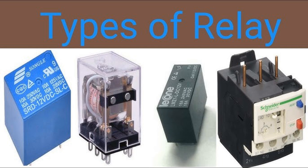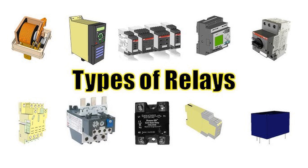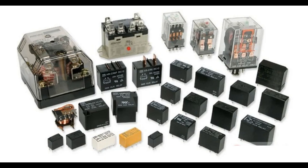Applications: Transformer Protection — used to detect internal transformer faults by comparing the currents on the primary and secondary sides. Generator Protection — monitors for internal faults in generators, such as winding failures, that could otherwise cause severe damage. Bus Bar Protection — protects sections of bus bars by monitoring the currents entering and leaving each section, ensuring prompt isolation during faults. Motor Protection — detects internal faults in large motors, which can cause extensive damage if not isolated quickly.